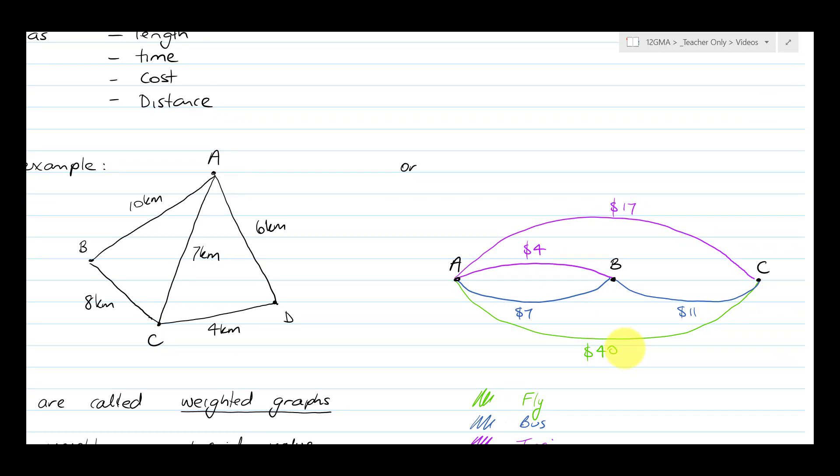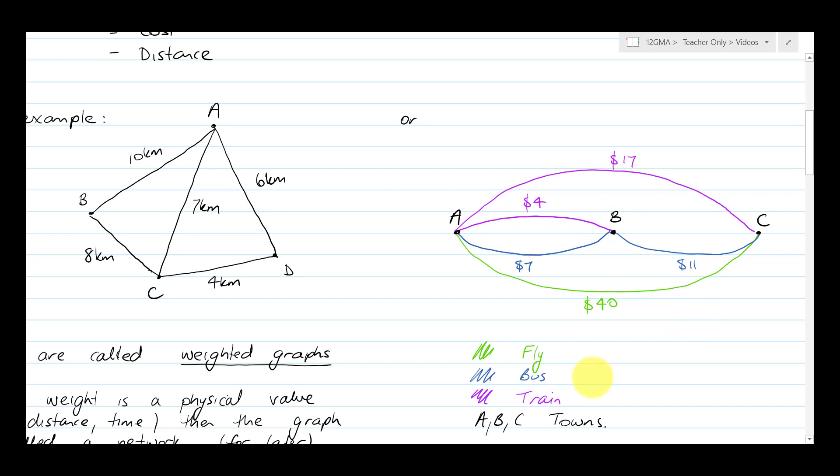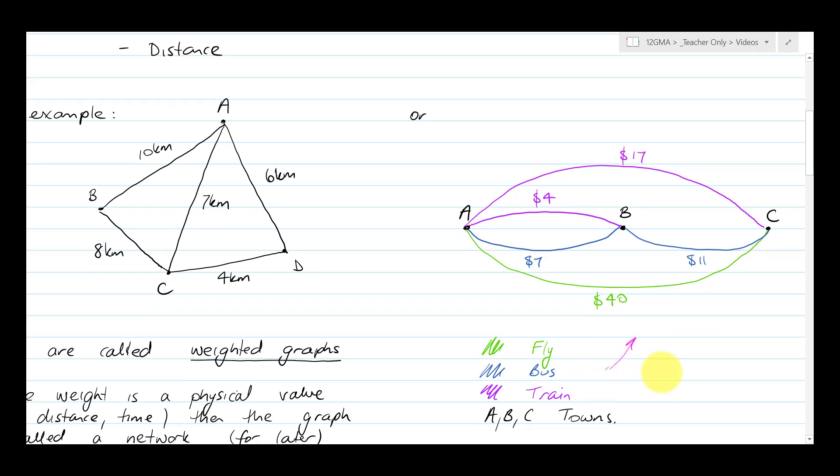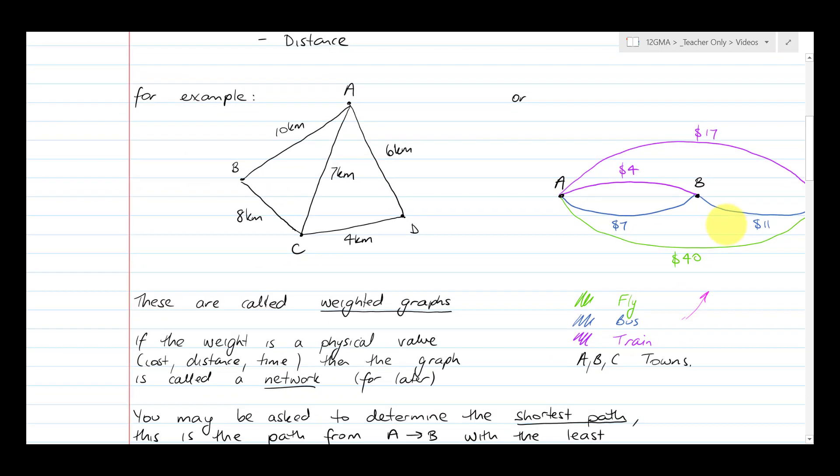Here's an example: it could be a public transport type graph with the cost associated with that. These graphs are called weighted graphs.